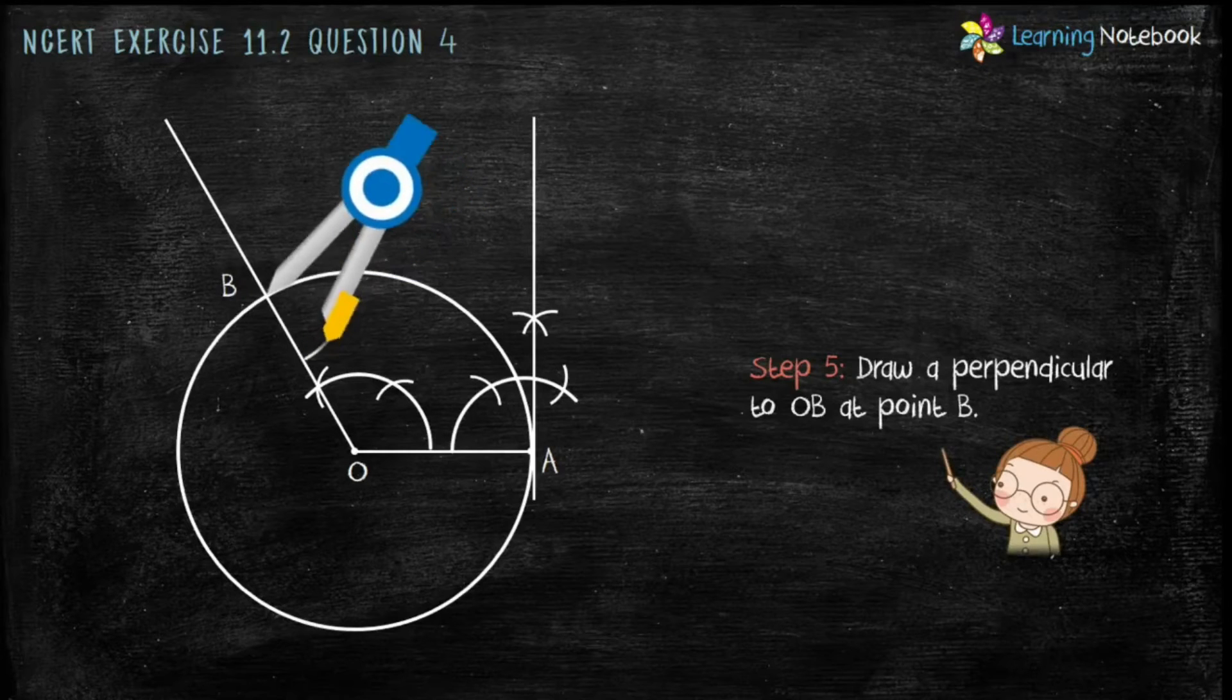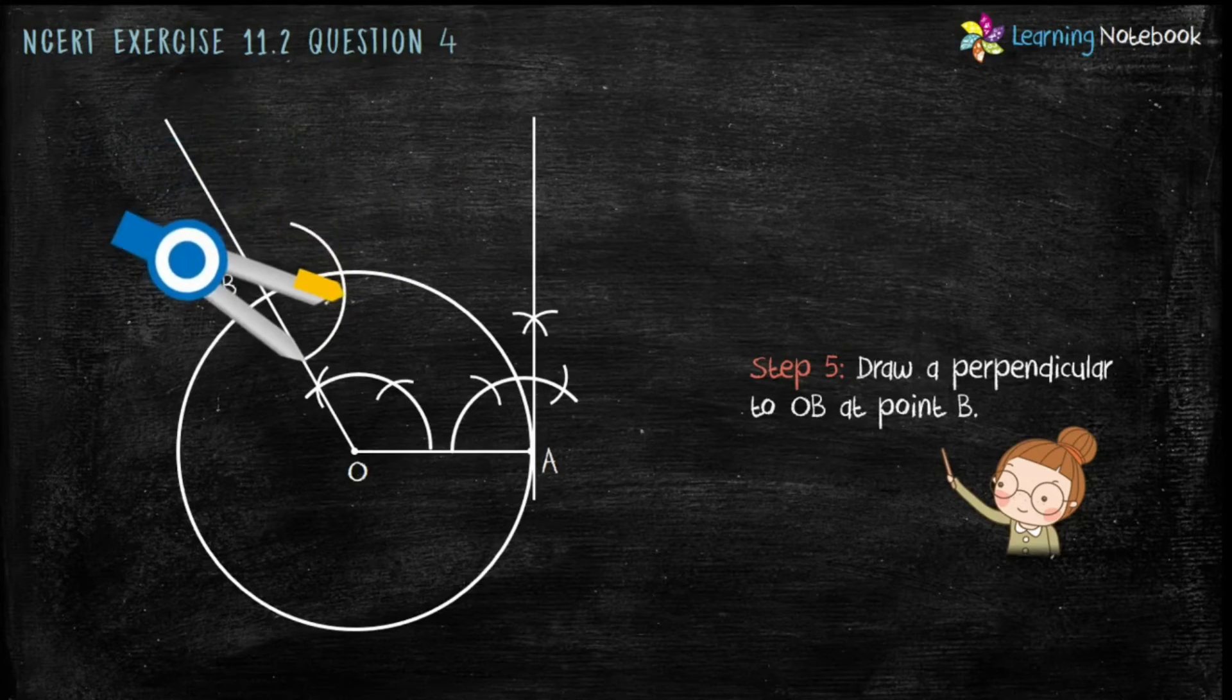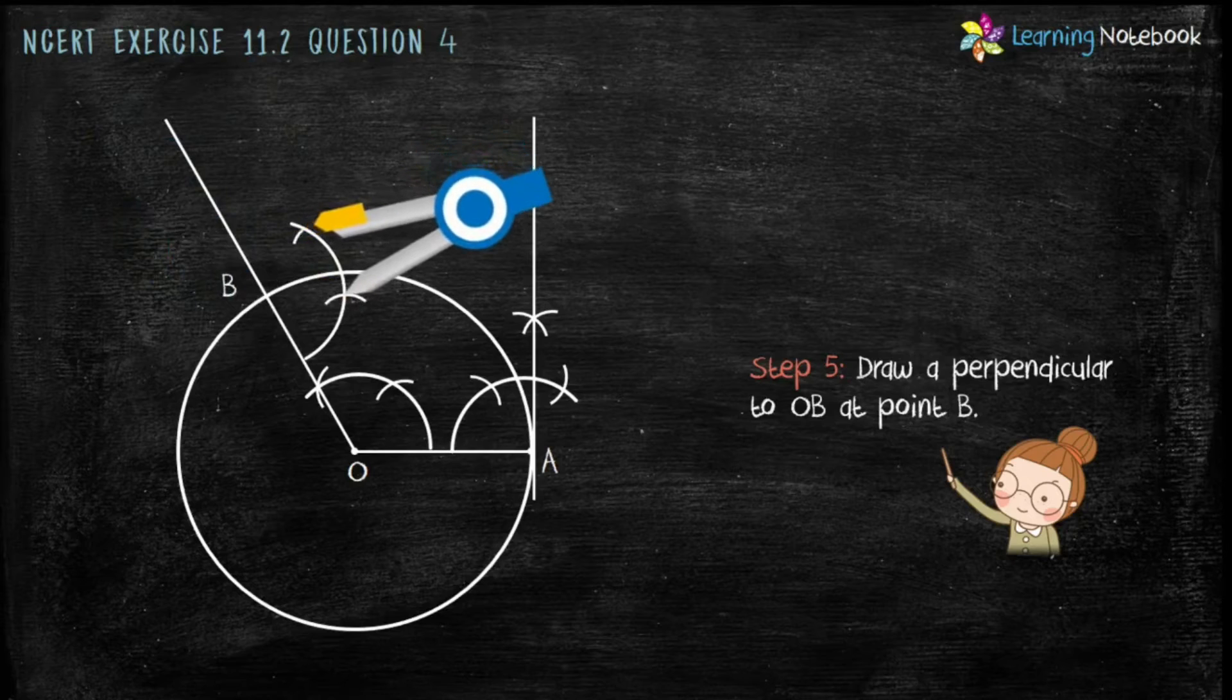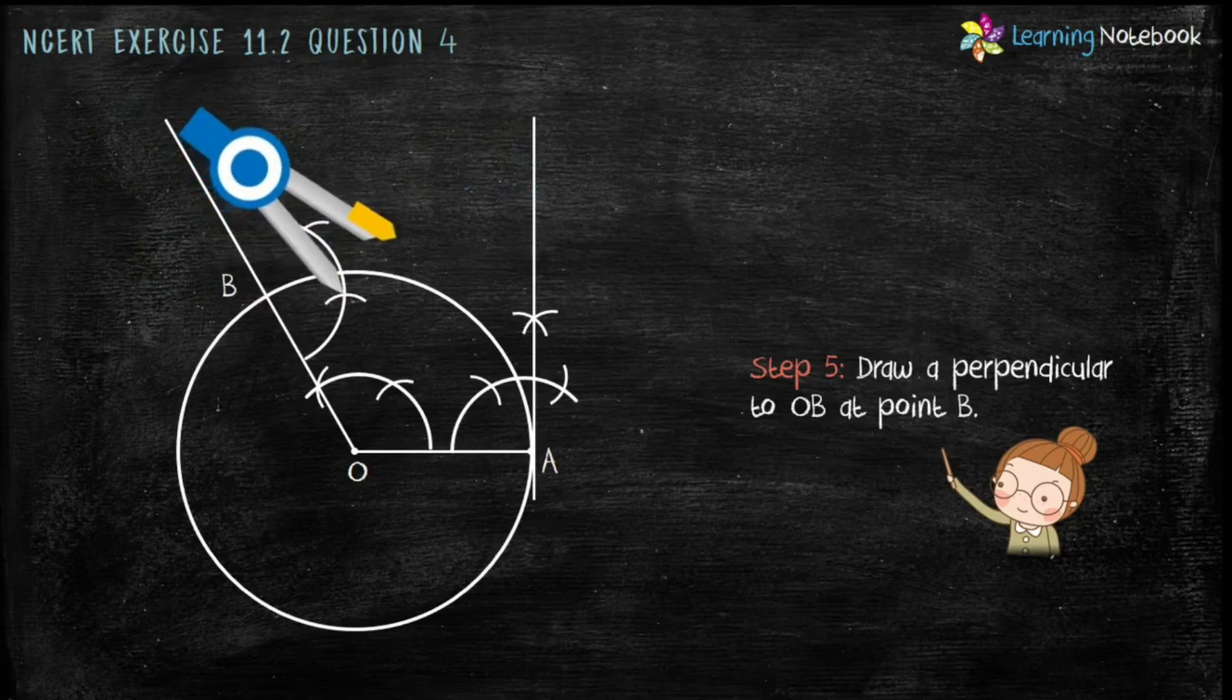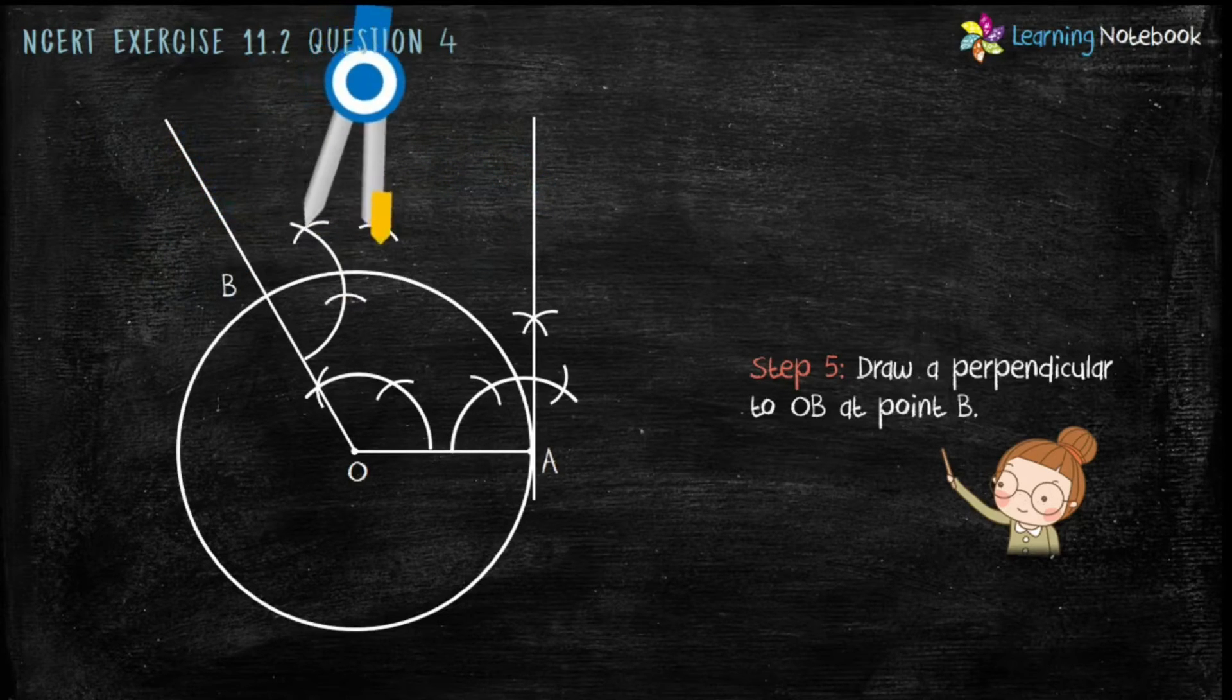For this, draw a perpendicular to OB at point B. It means we have to make an angle of 90 degrees with radius OB.